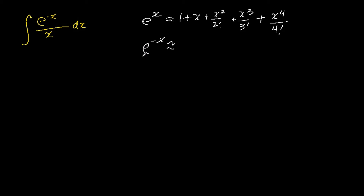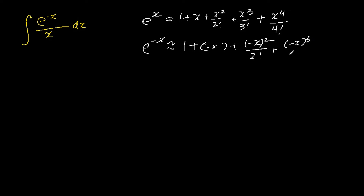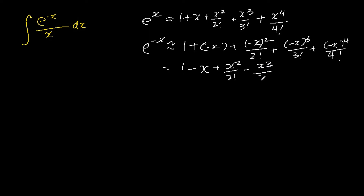The Maclaurin series of e to the power of negative x can be derived by substituting negative x into the Maclaurin series of e to the power of x. So we have 1 plus negative x plus negative x squared over 2 factorial plus negative x cubed over 3 factorial plus negative x to the power of 4 over 4 factorial, which simplifies to 1 minus x plus x squared over 2 factorial minus x cubed over 3 factorial plus x to the power of 4 over 4 factorial.